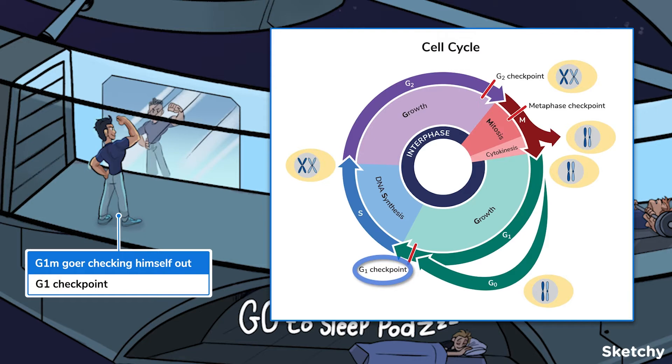This process is regulated by specific growth factors such as insulin, platelet-derived growth factor, epidermal growth factor, and erythropoietin. They specifically bind to tyrosine kinase receptors allowing the cell to enter the S phase. Alright, one checkpoint down, two more to go.